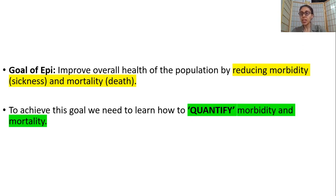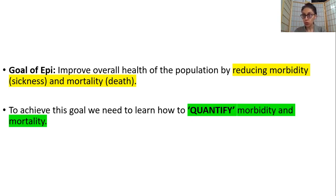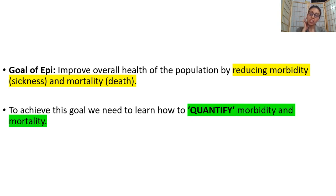What do we mean by morbidity and mortality? Morbidity is sickness — any sort of disease condition, be it acute or chronic. Type 2 diabetes is morbidity; coronavirus is also morbidity. Mortality, as the term suggests, is death — secondary to disease or any other condition. So morbidity refers to a disease condition, whereas mortality refers to death. The aim of epidemiology is to improve the overall health of the population by reducing morbidity and mortality.